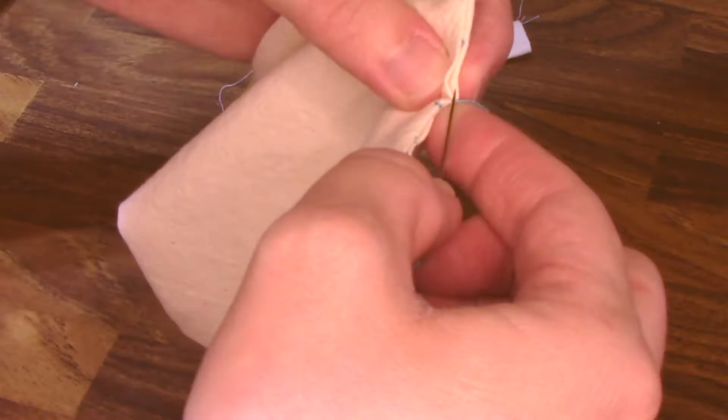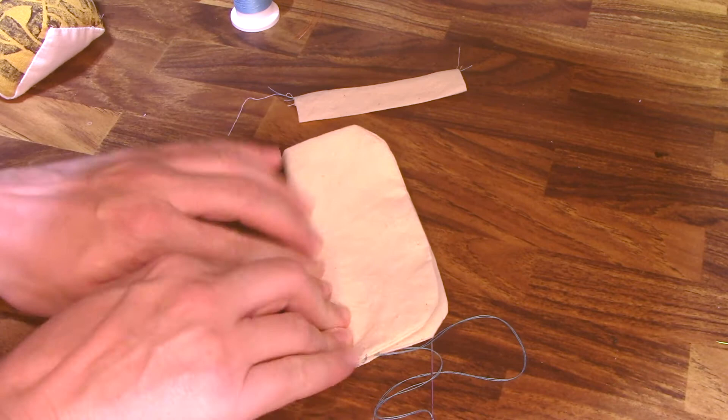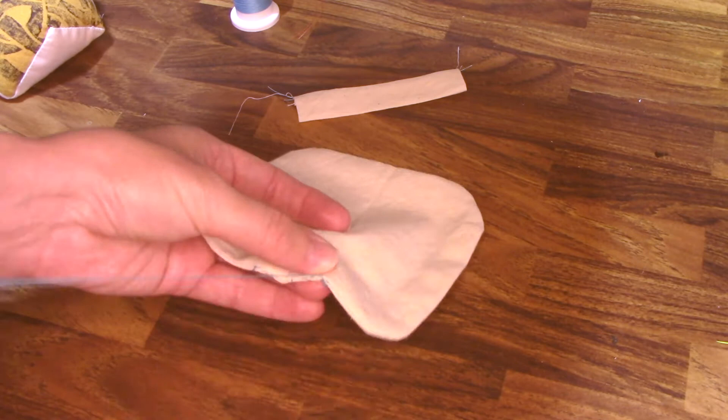Then fold in half to find the center of the bow, stitch back to the center, and use a running stitch or basting stitch to sew along the center. Then pull your thread to gather the bow.